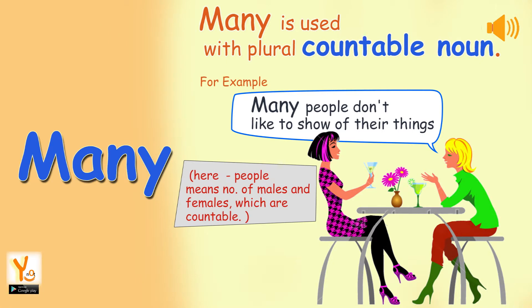Many is used with plural countable nouns. For example, many people don't like to show off their things. Here, people means a number of males and females, which are countable.